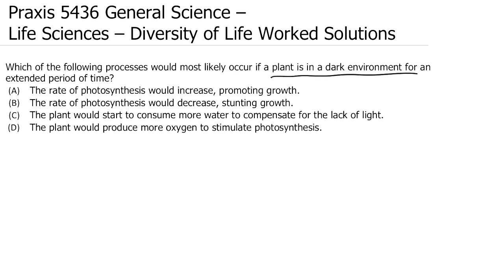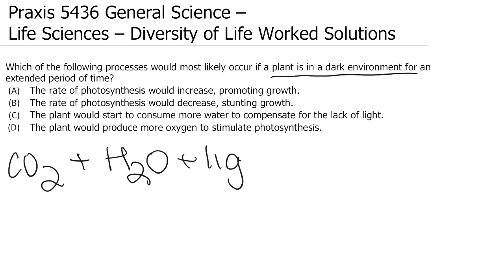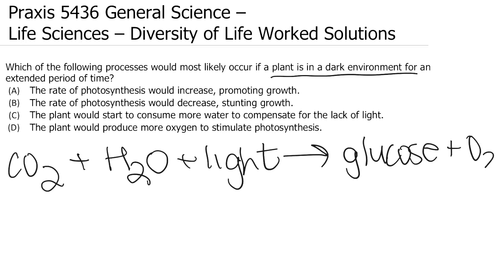Let me write out the equation just so we can remember it and think about it. In order for a plant to undergo photosynthesis and make the sugars it needs to survive, it needs light. In a dark environment, it doesn't have that, so photosynthesis is definitely going to be impacted. Knowing that, let's go through our answer choices.